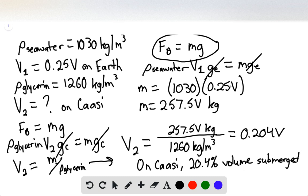So given that we have 25% of the volume submerged when floating on seawater, transferring this over to a new planet with a new acceleration due to gravity, but more importantly, a new type of liquid, instead of seawater we're using glycerin, we can find that on Cassi, 20.4% of the volume will be submerged of this apparatus. It is also important to note that when finding relative percentages of this volume, the gravity change actually did not matter in the end, and it's simply canceled out.